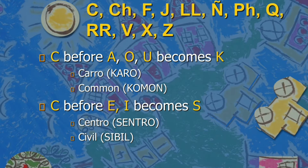Another condition for the letter C: if it is before E or I, it becomes S. Like the word centro or center — it becomes Sentro, with the letter S. And civil becomes Sibil.